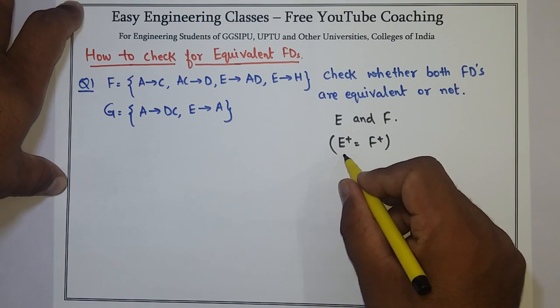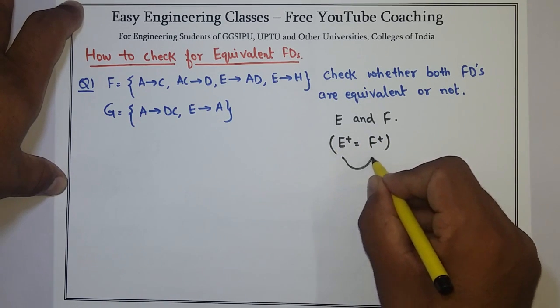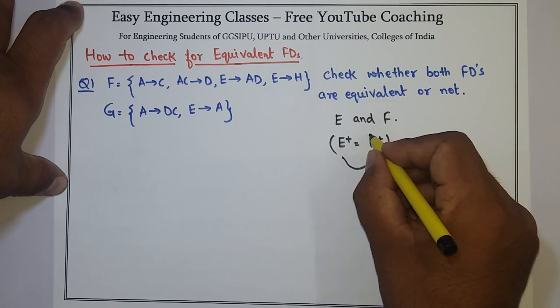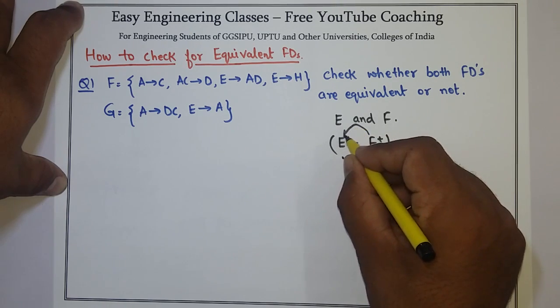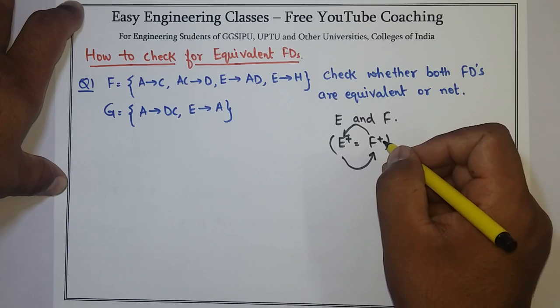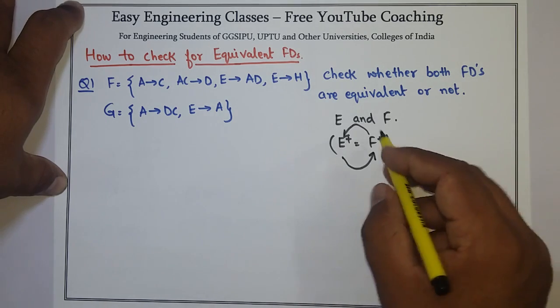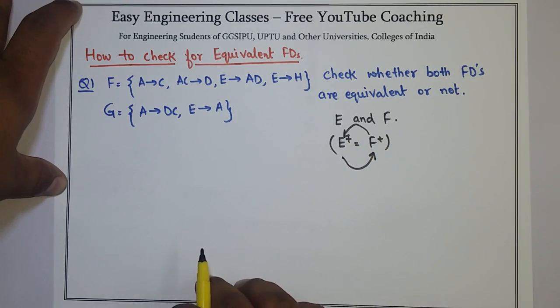That means every FD in E can be inferred from given FDs in F, and if every FD in F can be inferred from given FD in E, then I can say that both E and F are equivalent.